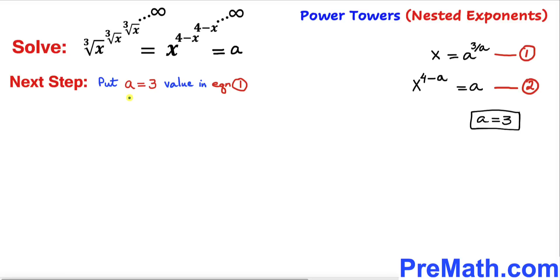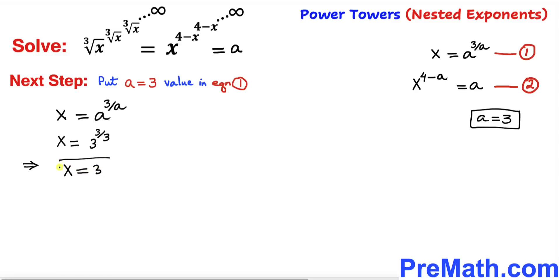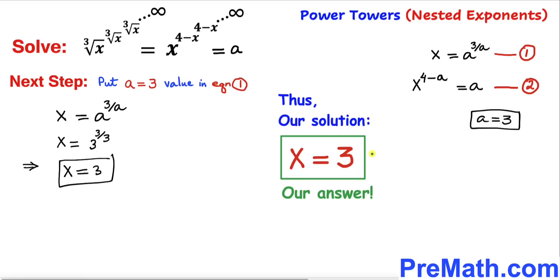Now we substitute a equals 3 into equation 1. Equation 1 says x equals a to the power (3 divided by a), so x equals 3 to the power (3 divided by 3). Since 3 divided by 3 equals 1, we get x equals 3 to the power 1, which equals 3. Thus our solution is x equals 3. Thanks for watching and please don't forget to subscribe to my channel for more exciting videos.